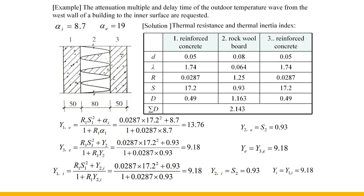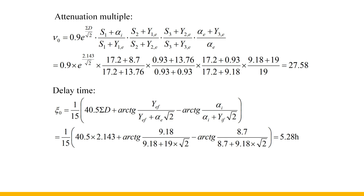Then, Y1E and Y3E are calculated according to the temperature wave from outside to inside. Y2E equals S2 because D2 is greater than 1. YE in the delay time calculation formula is Y3E on the surface facing the wave. Y1E is calculated according to the temperature wave from inside to outside; YE in that formula is Y1E on the surface facing the wave. Y2E does not need to be recalculated since D2 is greater than 1 and equals S2. Y3E belongs to layers after D exceeds 1 so it is not required for the indoor wave calculation.